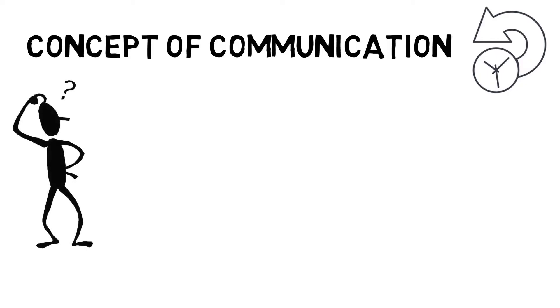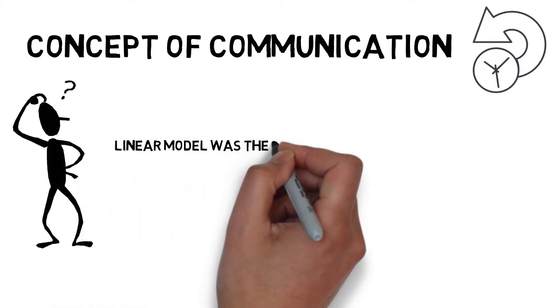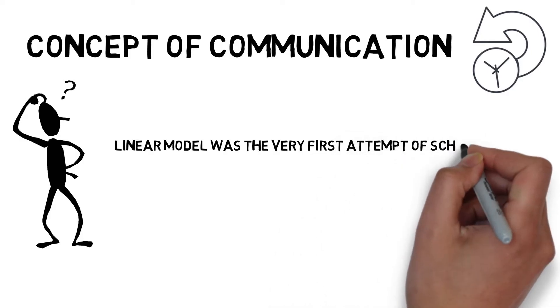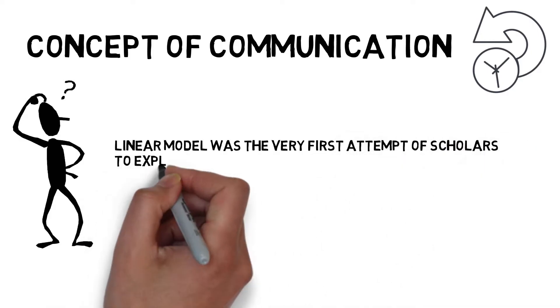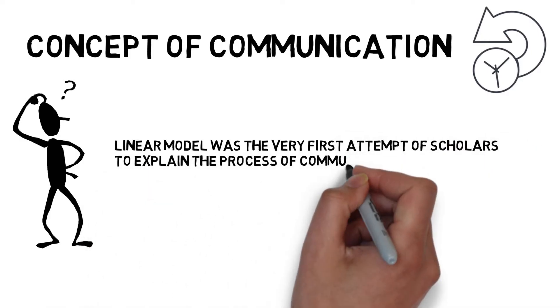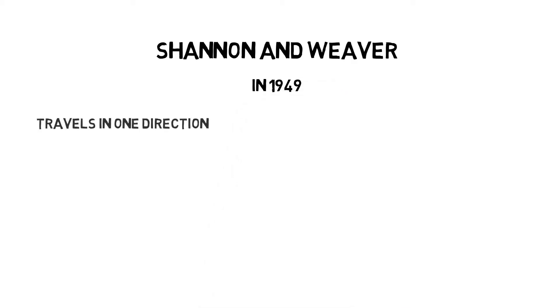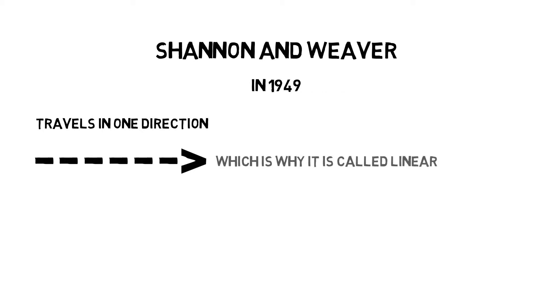Long ago, when the concept of communication as a study was new to the world, the linear model was the very first attempt of scholars to explain the process of communication. The linear communication model was first introduced by Shannon and Weaver in 1949. In this model, the message travels in one direction, which is why it is called linear — from the sender to the receiver.